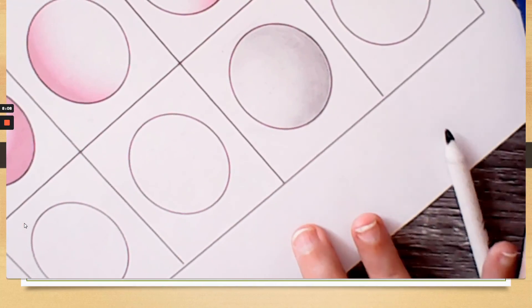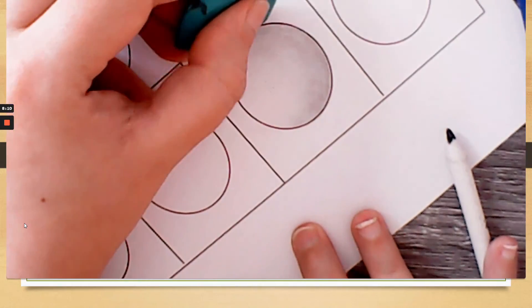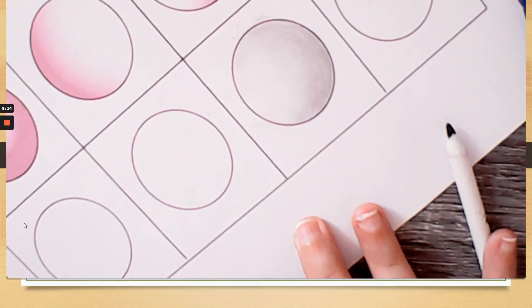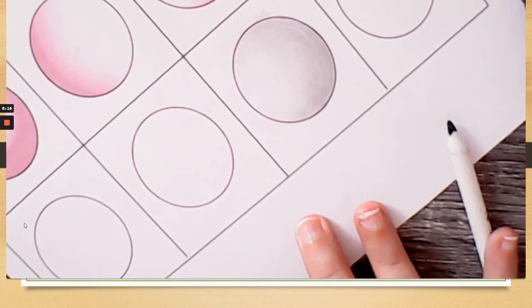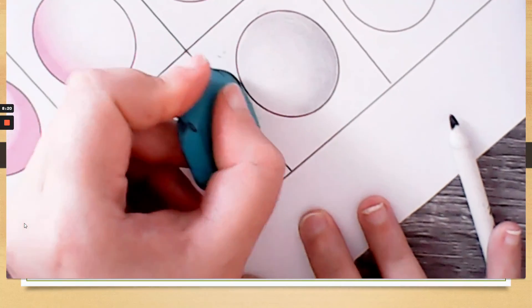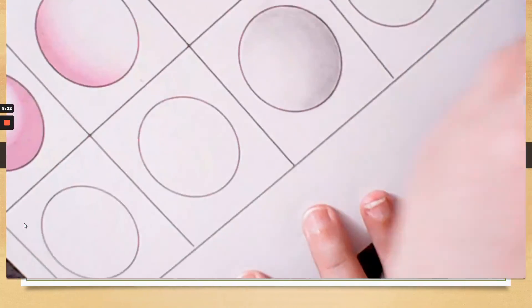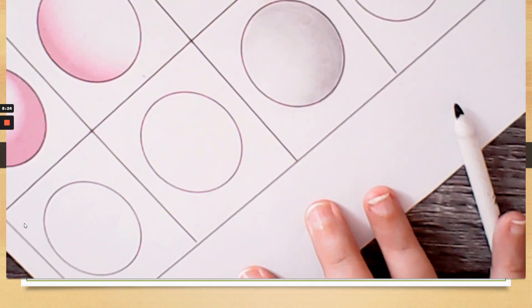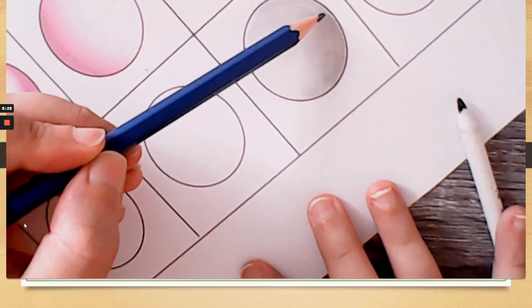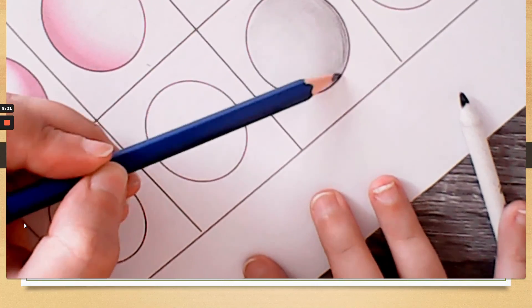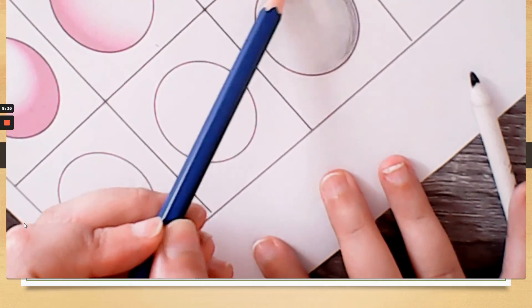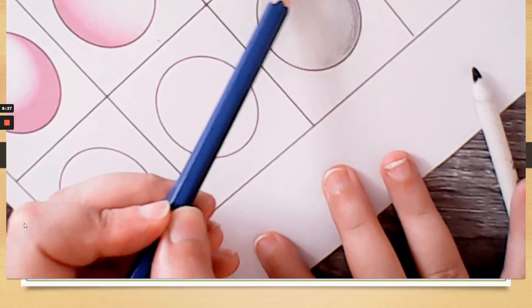Okay, so if you find that you have gone out, you can always use an eraser. Now we can see here that this is darker than this. That's fine. I always do more than one layer. Always do more than one layer.